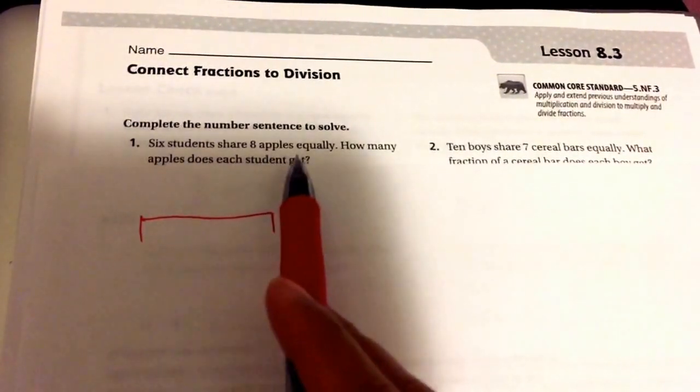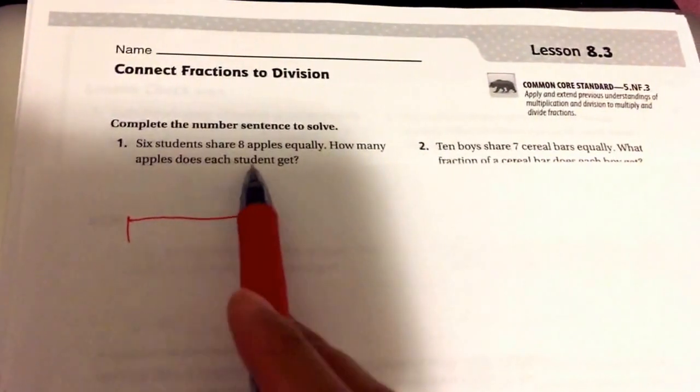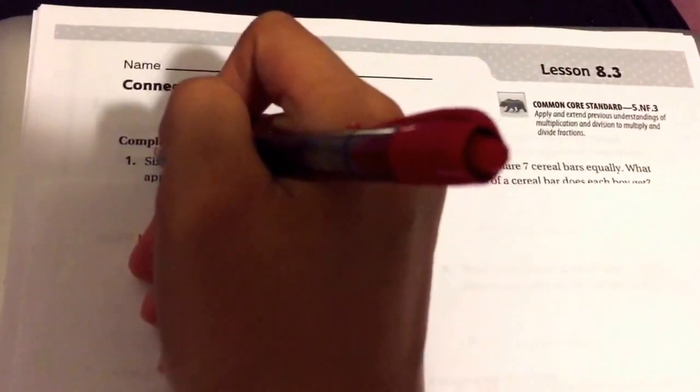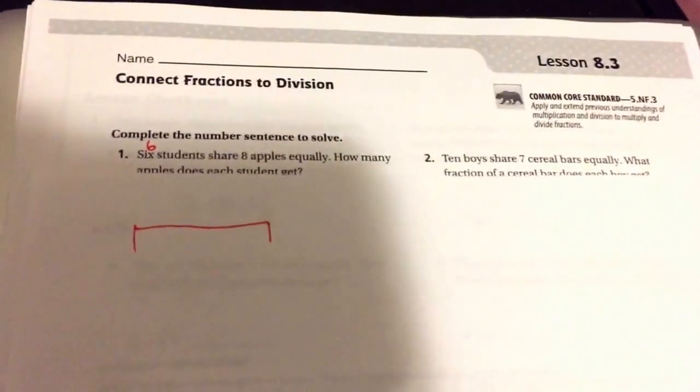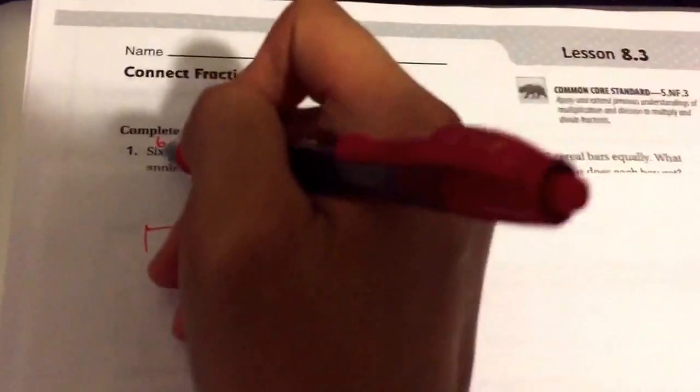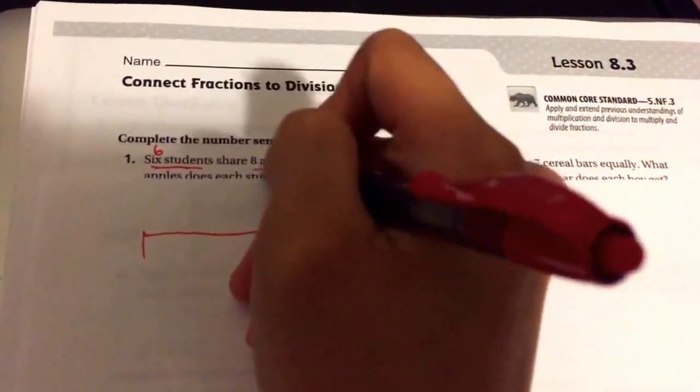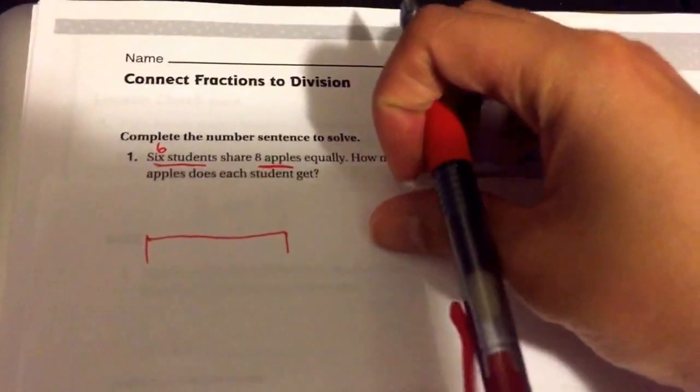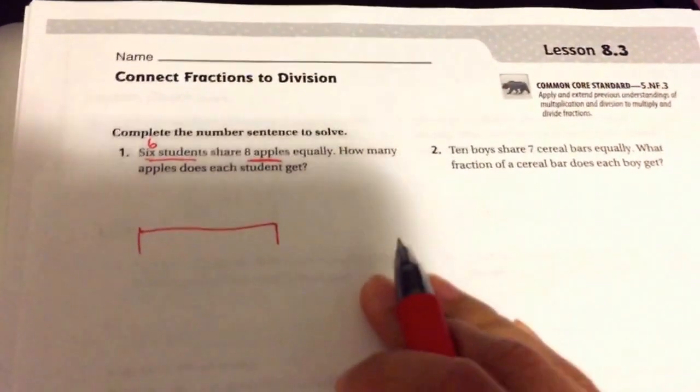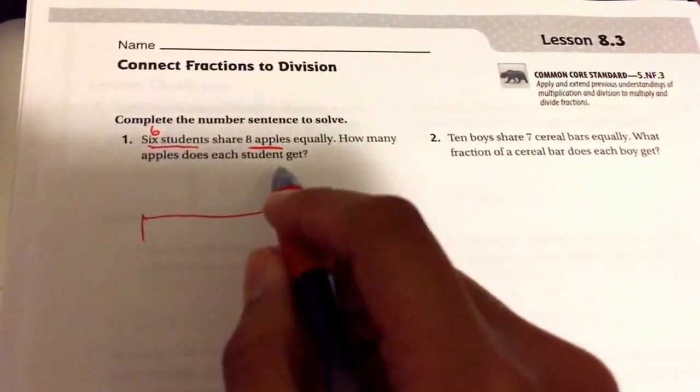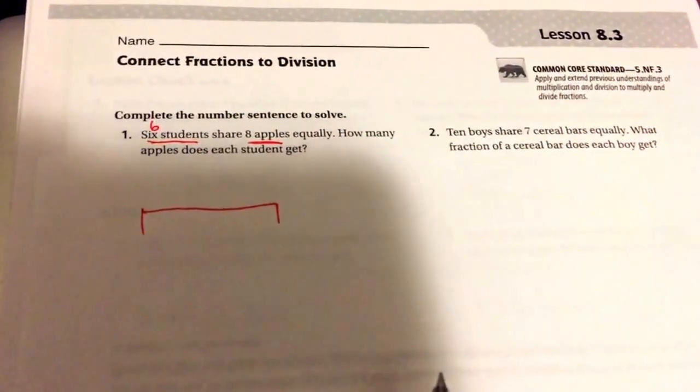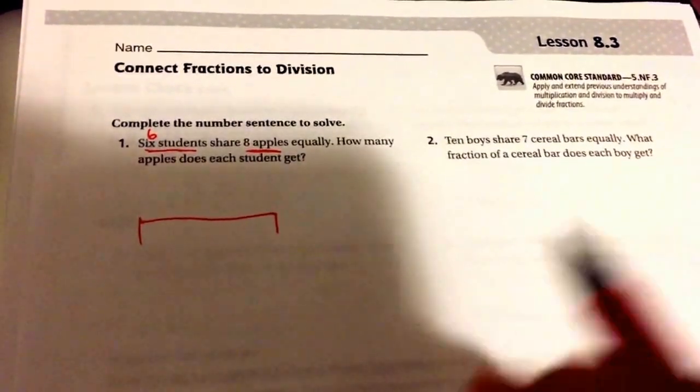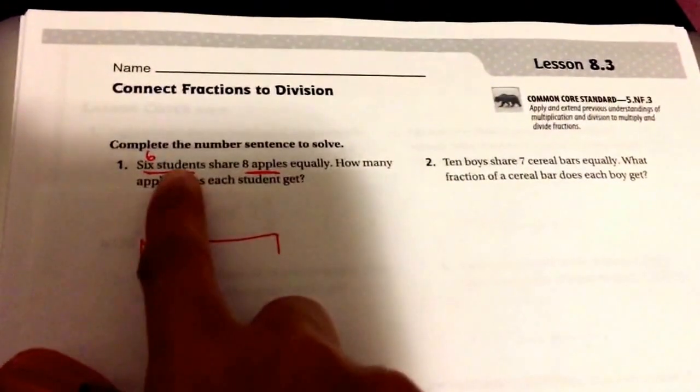Let's read it. 6 students share 8 apples equally. How many apples does each student get? Okay, first I'm going to change the 6 to a number so I know that I'm going to use the number 6 and 8. Now, we have 6 students. And we have 8 apples. What are we doing? We are sharing the 8 apples with the 6 students. And we're finding out how many apples each student will get.